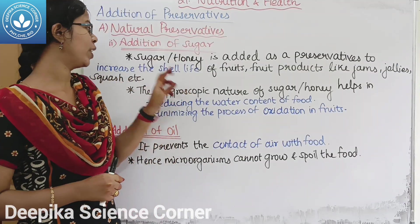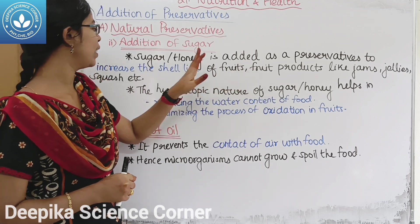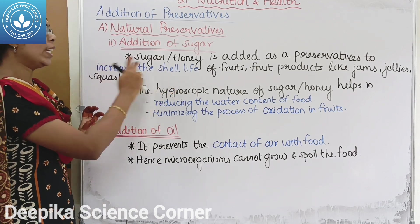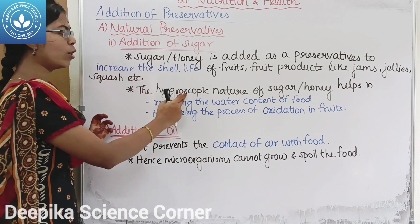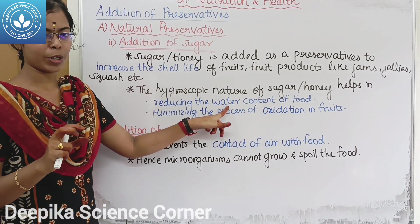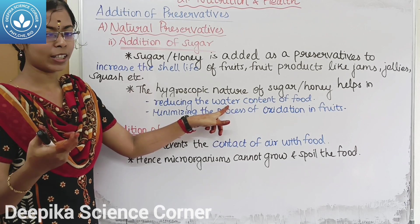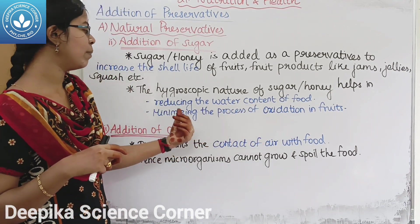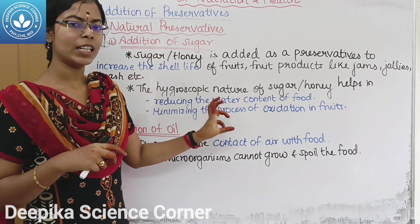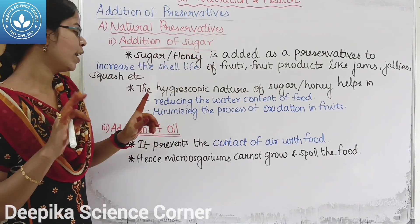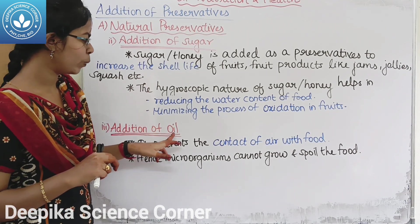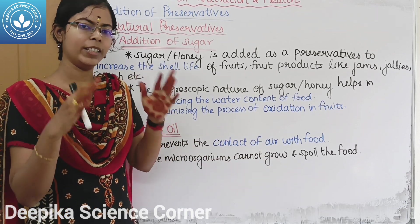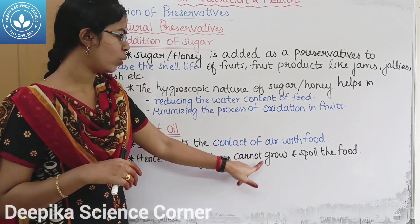The second natural preservative is sugar or honey. Adding sugar or honey to fruit products like jams, jellies, and squashes extends their shelf life. Sugar and honey are hygroscopic in nature — they reduce the water content and minimize the oxidation process. The third natural preservative is oil, which prevents the contact of air with food, so microorganisms cannot grow and spoil the food.